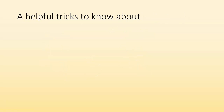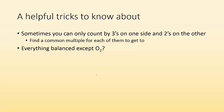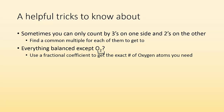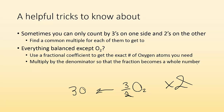Here are some helpful tricks for when you go to balance some of these, because they're not always going to be super easy. Sometimes you can only count by threes on one side and twos on the other — you can find a common multiple and get to it. If it's twos and threes, you can get both of them to six. Also, if everything is balanced except oxygen, and you can only count by two but need an odd number, you can use a fractional coefficient. For example, if you need three oxygen atoms but have O2, you can use three-halves of O2. Then multiply the whole equation by two so the fraction becomes a whole number.